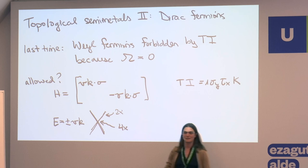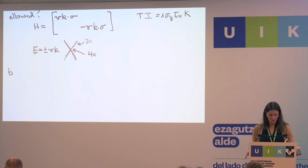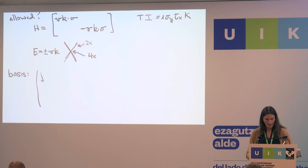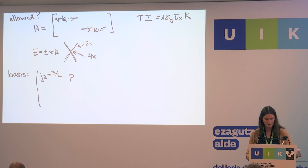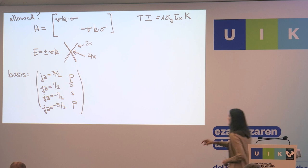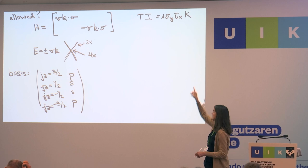The basis that I'm thinking of is motivated by cadmium arsenide. The basis is: I have some orbital coming from p-orbitals which has Jz equals three-halves, an s-orbital with Jz equals one-half, another s-orbital with Jz equals minus one-half, and another p-orbital with Jz equals minus three-halves. You can see from this time reversal and inversion operator that this thing is purely off-diagonal — it mixes the p-orbital and the p-orbital. These things are time-reversal-inversion partners.